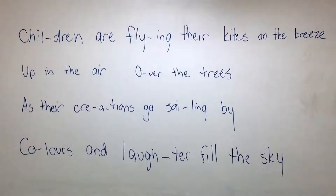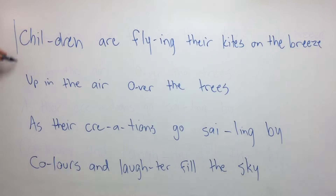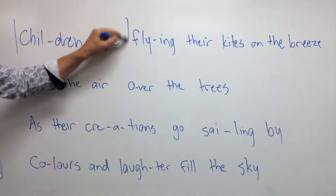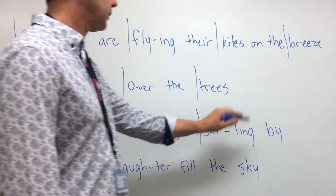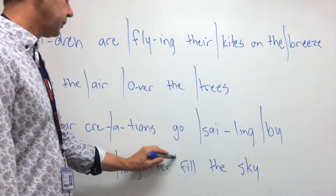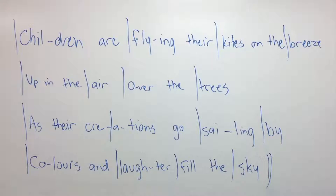Children — there's one right at the beginning — are flying their kites on the breeze, up in the air, over the trees, as their creations. Now there's one that falls right in the middle of a word. Go sailing by, colours and laughter fill the sky. That's it. So we've marked all the stress points that we found in the text, and these stress points will become our bar lines.